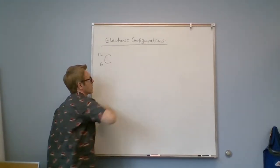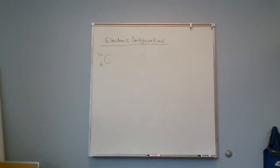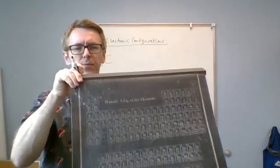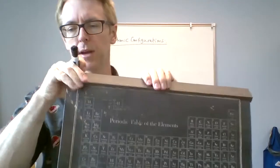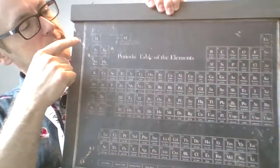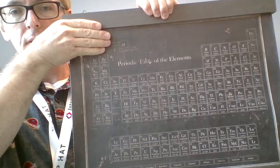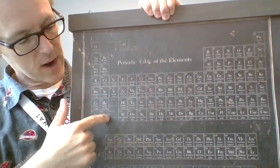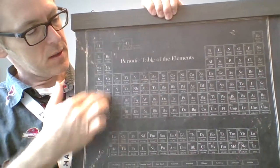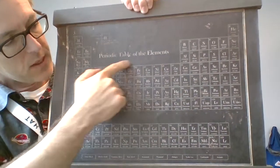But where are those electrons? You write electronic configurations using a periodic table. Let's take a second to inspect the periodic table. If we ignore hydrogen, we're left with this rectangle — called the s block — which is two columns. Then we've got this rectangle in the middle, which is called the d block.